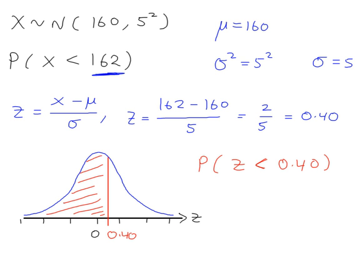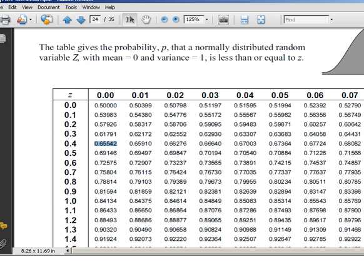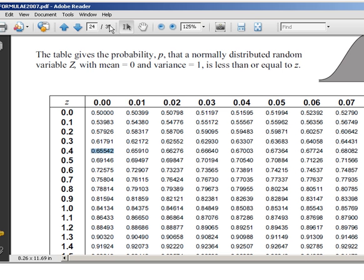Now we're ready to go to the probability tables. I'm on page 24 of the formula book. You've got z-values on the outside, and inside here these values are probabilities.